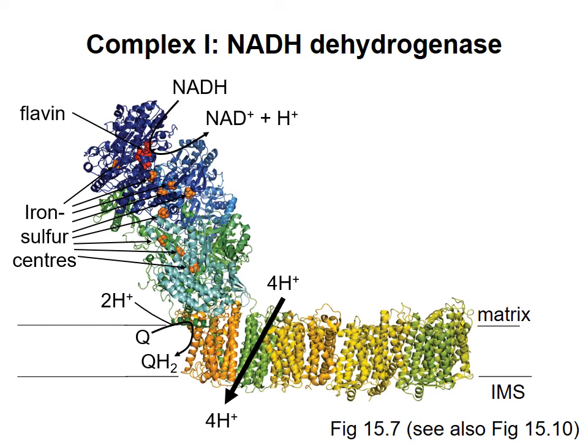Note that NADH releases one proton when it loses its two electrons, and coenzyme Q gains two protons when it gains the two electrons. Overall, the reaction catalyzed by NADH is shown here. Five protons are removed from the matrix and four are added to the intermembrane space.